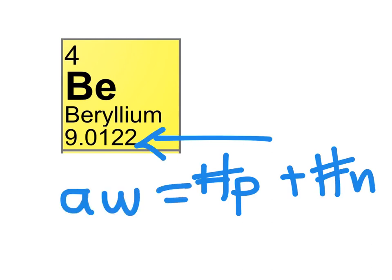Since the atomic weight is the number of protons plus the number of neutrons, we can use a little algebra to rearrange our equation.